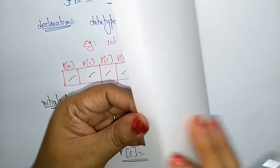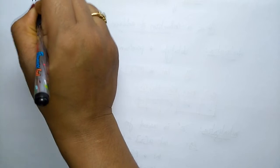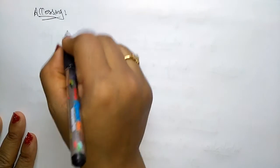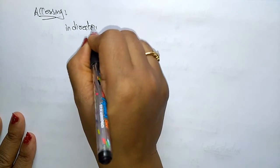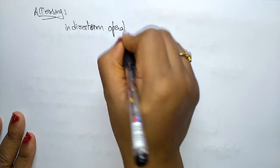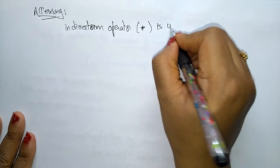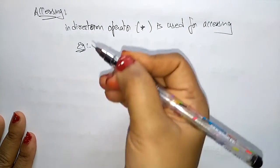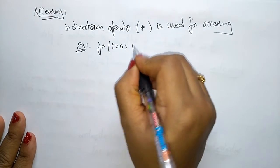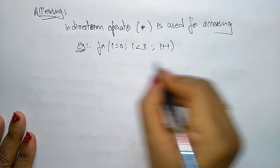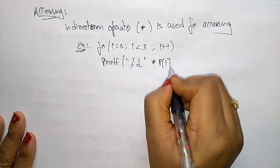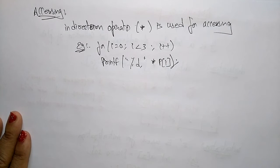Now let us see accessing of array of pointers. For accessing the array of pointers we need the indirection operator — that is, the `*` pointer operator is used for accessing the values. To access the array of pointers you use a for loop: for i = 0; i < 3; i++, and use `*p[i]` to access each element.